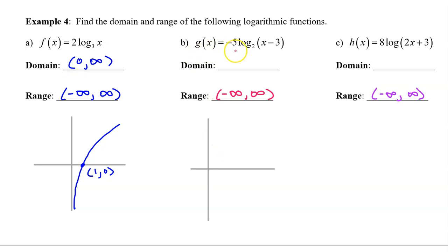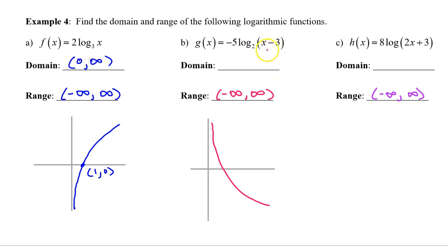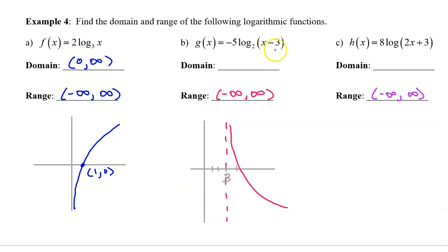Part B: The graph of g of x has three transformations — a reflection over the x-axis, a vertical dilation by a factor of 5, and a horizontal translation by 3. The negative a value means the graph is reflected over the x-axis. The minus 3 inside means a horizontal translation of positive 3 units to the right, including the vertical asymptote. This horizontal translation is the only thing changing the domain, which will now be from 3 to infinity. Use a parenthesis on the 3 since the vertical asymptote cannot be included.